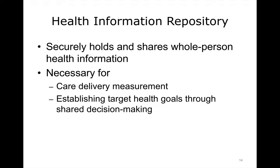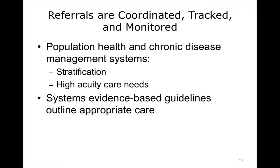Most care coordination models are reliant upon well-designed information systems, including secured health information repositories that allow providers to share whole-person information. This is necessary for effective measurement of the care delivery models, as well as establishing target goals for shared decision-making. Care coordination, population health, and chronic disease management systems allow patient population condition stratification and identification of high-acuity care needs. Systems' evidence-based guidelines outline appropriate care when needed.